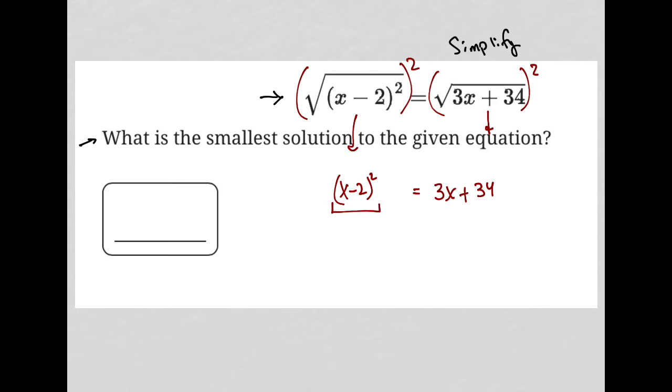I'm going to now expand this into x minus 2 times x minus 2, which simplifies into x squared minus 4x plus 4. I got that from using a process called FOIL, which hopefully sounds familiar. It's just an acronym.